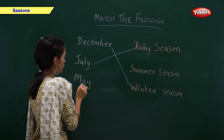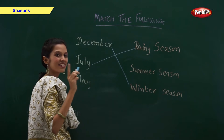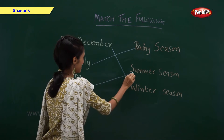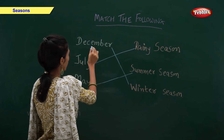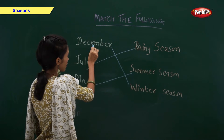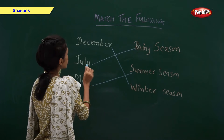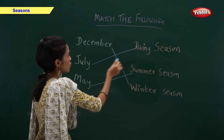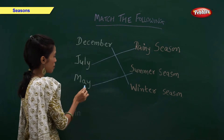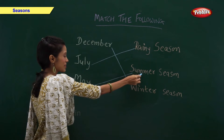Month of May falls in which season? Yes, summer season. So, December falls in winter season. July falls in rainy season. And May falls in summer season.